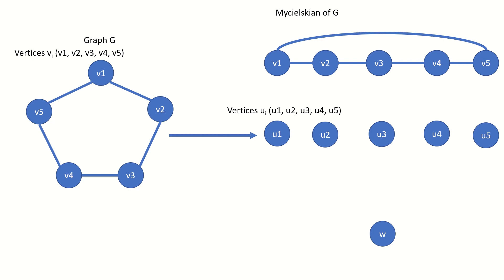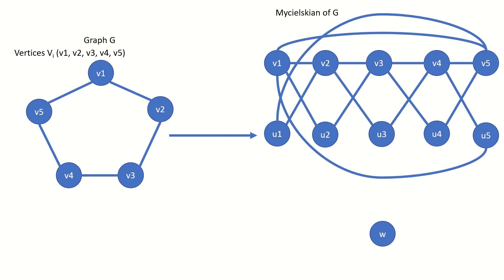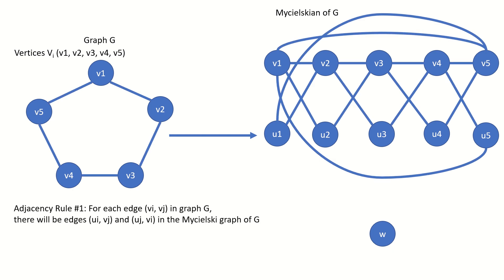We have to connect the rest of the vertices according to the following rules of the Mycielsky construction. There is a copy of graph G in the Mycielsky graph of G, so all of the edges from graph G are present between the v vertices. However, there are also new edges formed: for each edge vi vj in graph G, there are edges ui vj and uj vi in the Mycielsky graph of G.